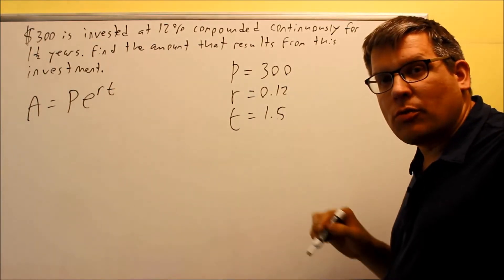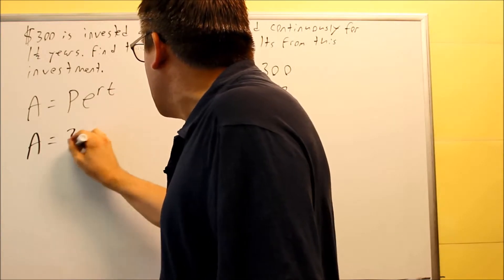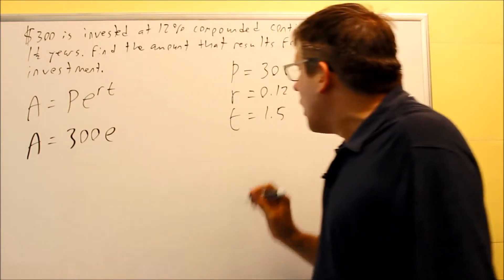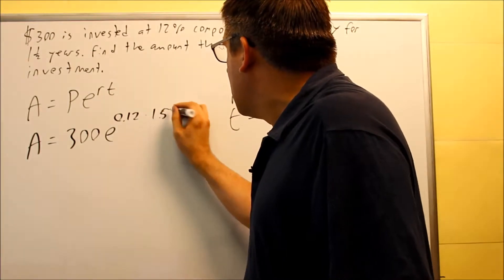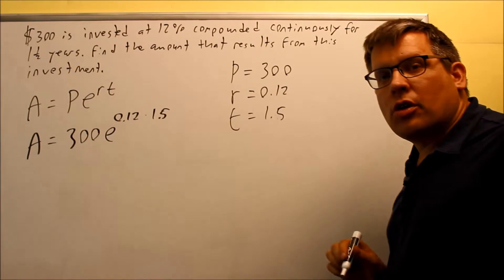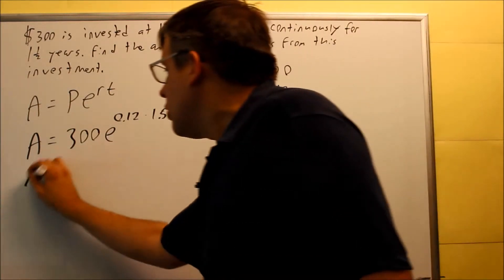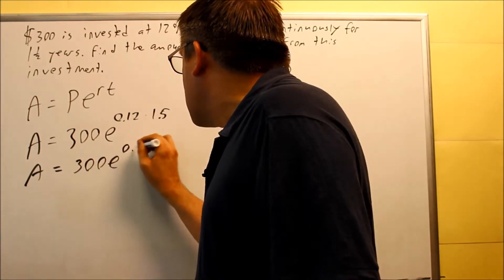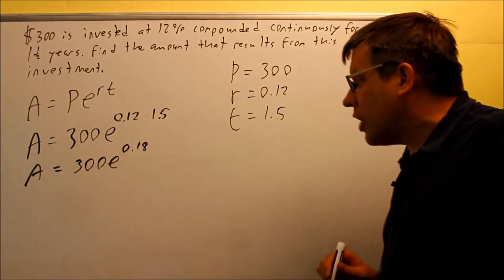We just want to see how much extra money we make for interest this time. We have A is equal to P is 300, E to the R, R is 0.12 and we're multiplying that by our years which is 1.5. So both of these are going to be up there in the exponent position. When you multiply these together you're going to get 0.18. 0.12 times 1.5 will give you 0.18.